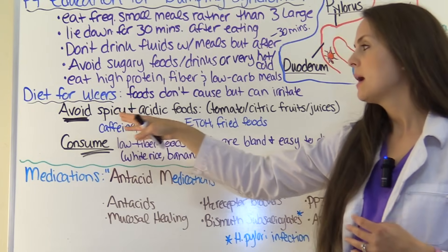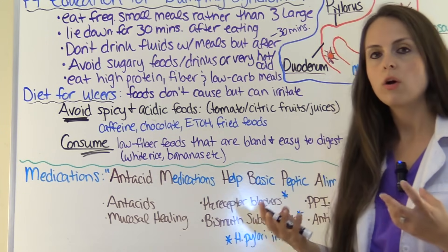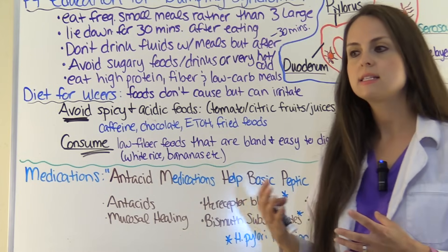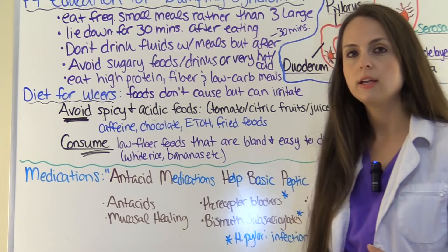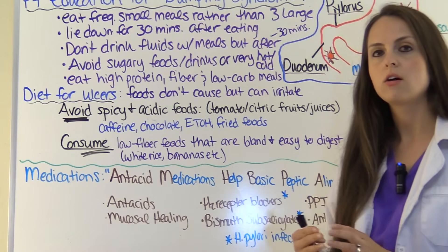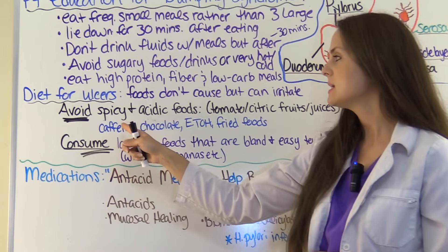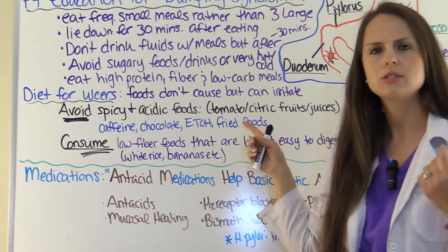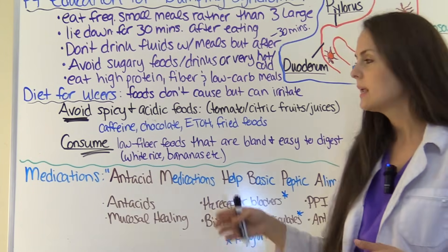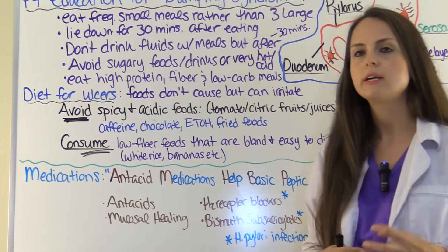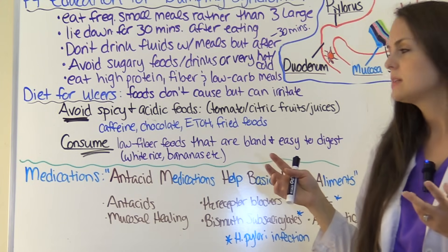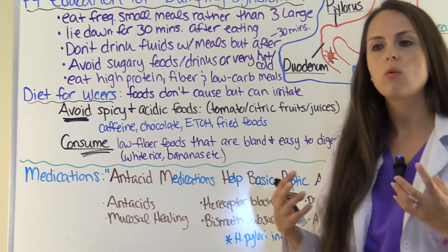Now let's talk about diet for a patient who has an active ulcer. Foods don't cause peptic ulcer disease, but they can irritate an ulcer that's already there and prolong healing. Patients should avoid spicy and acidic foods such as tomatoes, tomato juice, citrus fruits or juices, caffeine products, chocolate, alcohol, and fried greasy foods. On the flip side, they should consume low-fiber, bland foods that are easy for the gut to digest — like white rice and bananas.